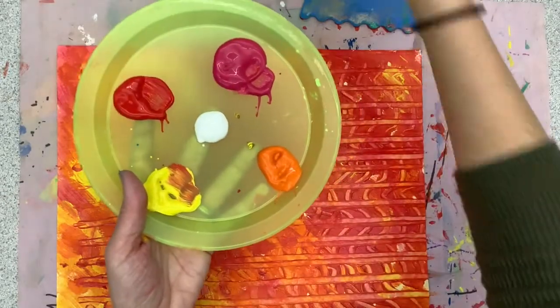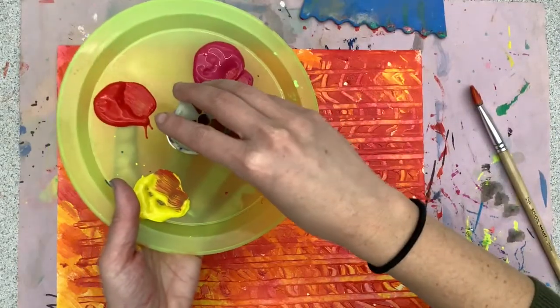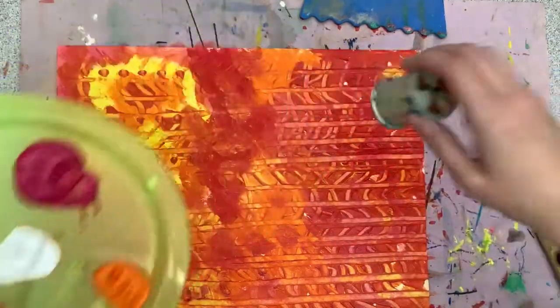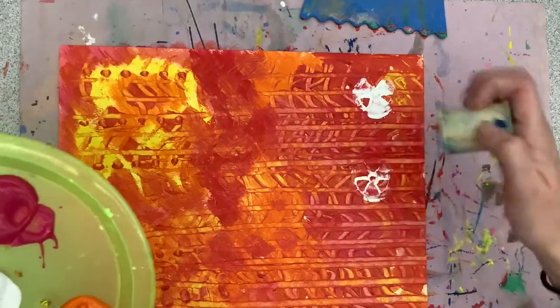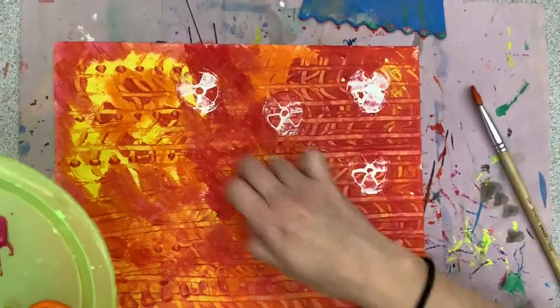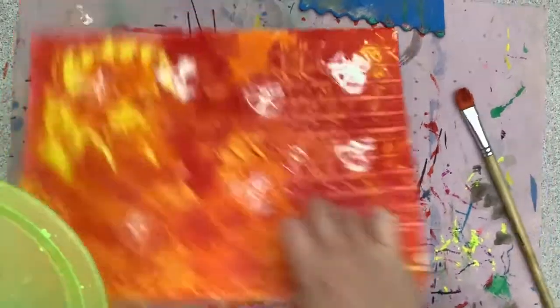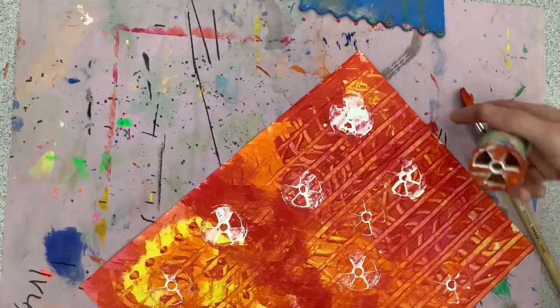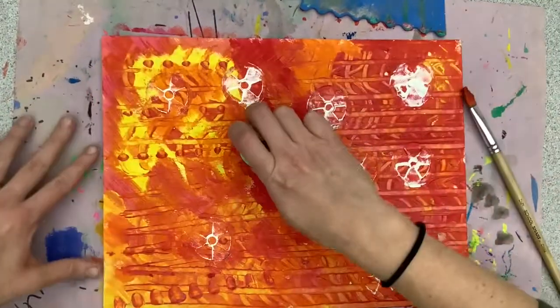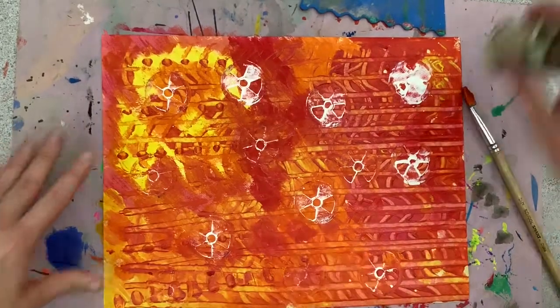Once you get some white and some stamps, you may take those tools and press into your white and press it on your paper. Keep pressing until there is no more white paint left on your tool.